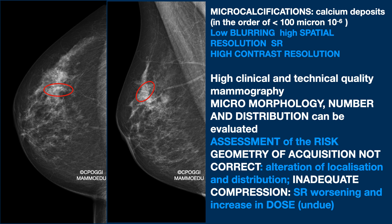It is clear, anyway, that in order to study the morphology, number, and distribution, the mammogram must be produced satisfying the acquisition geometry discussed in previous lessons. Rotation or incorrect distension modify the anatomical reality. So the microcalcifications will not appear on the image where they really are, and it will also be difficult to assess how they are distributed.